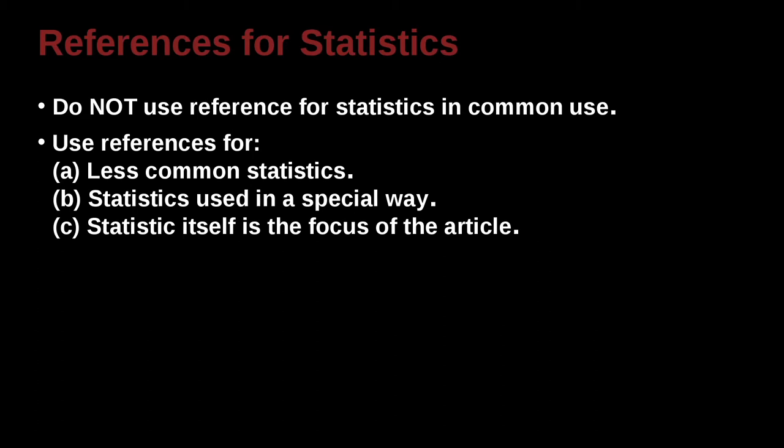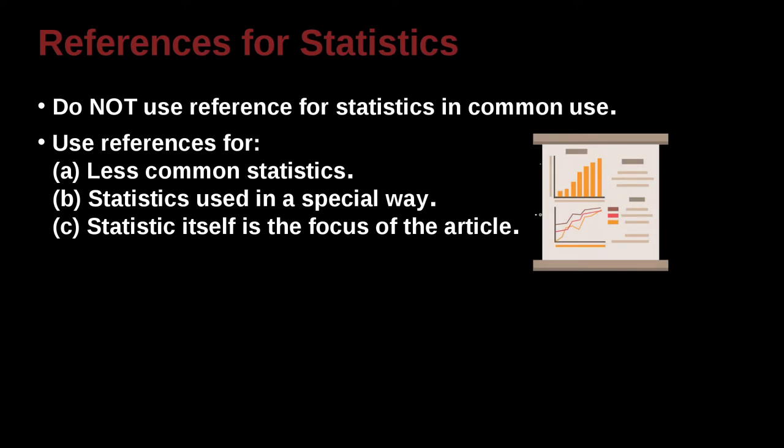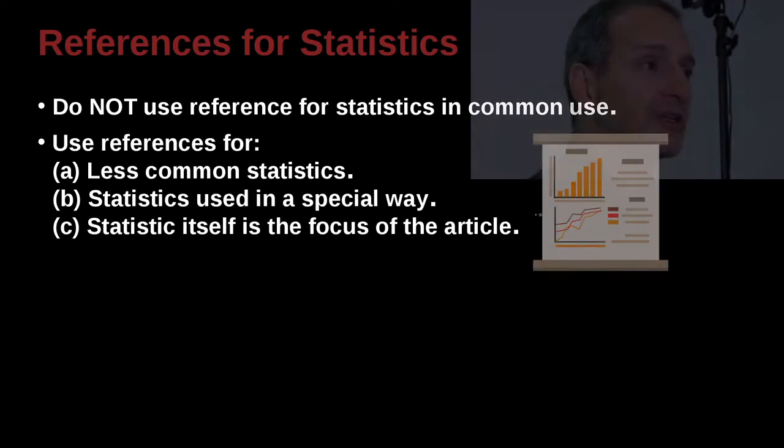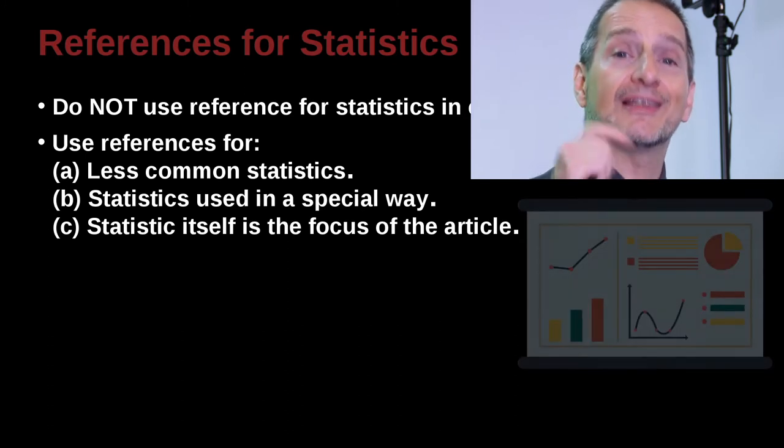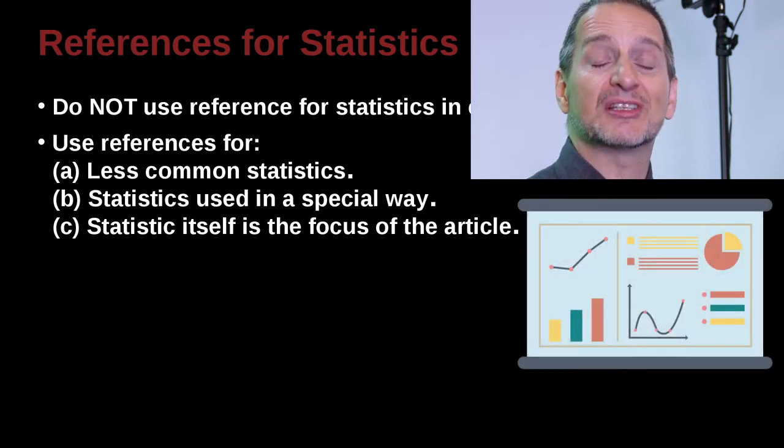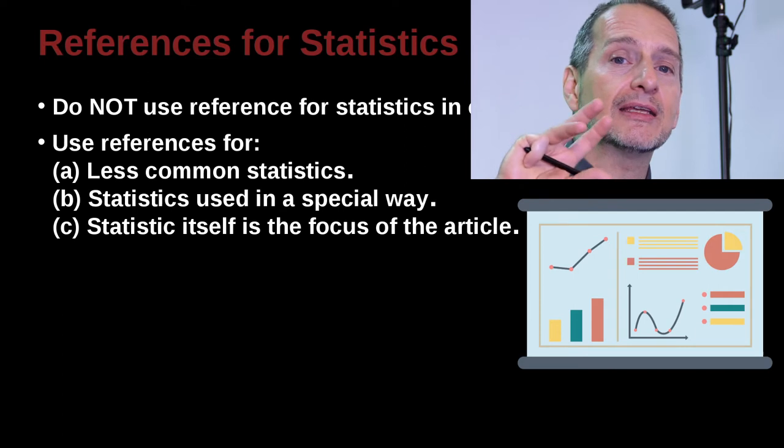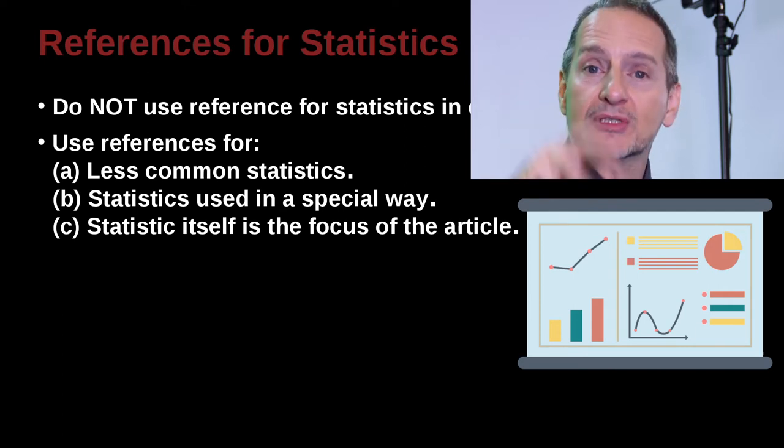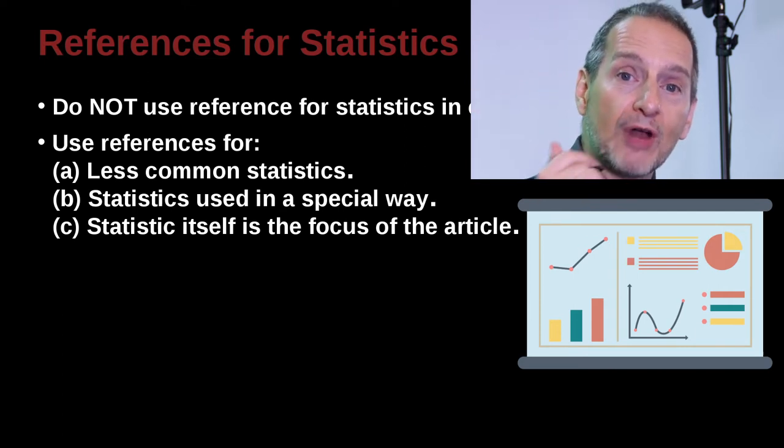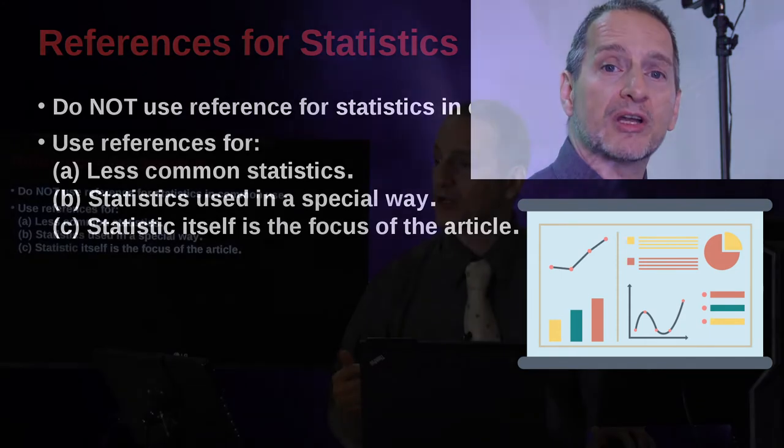Now if the statistic is more special, you would have to use a reference. And in that case, it's less common statistics, statistics that are used in a special or different way or innovative way, and statistics itself that is the subject of the article. So in this case, that means that if the article you're writing is about statistics or a statistical test or statistical method, or even something like a meta-analysis where you're actually manipulating the data in a way through a statistical formula, then you probably need to reference who did you get that from, where did it come from.